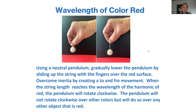Let's take an example of the color red. You use what's called a neutral pendulum — the color red is there and the pendulum is there — and you find the string length that resonates with red. You slip your fingers up the string, start a to-and-fro motion, and at the string length that is in resonance with the color red — while holding the intention of resonating with red — the pendulum will rotate clockwise, meaning you and your pendulum are in resonance with the color red.